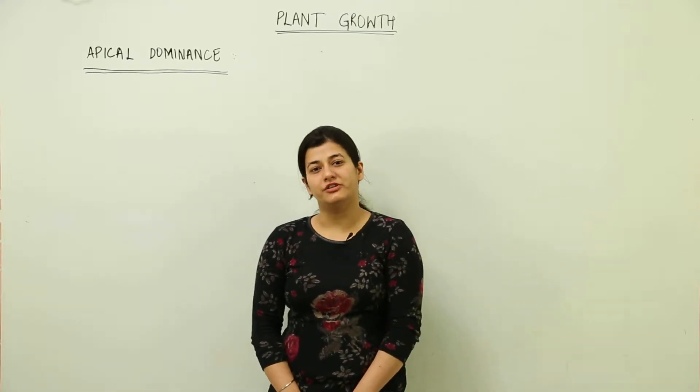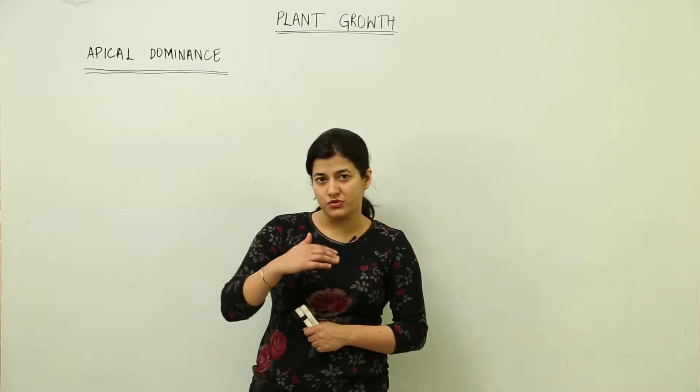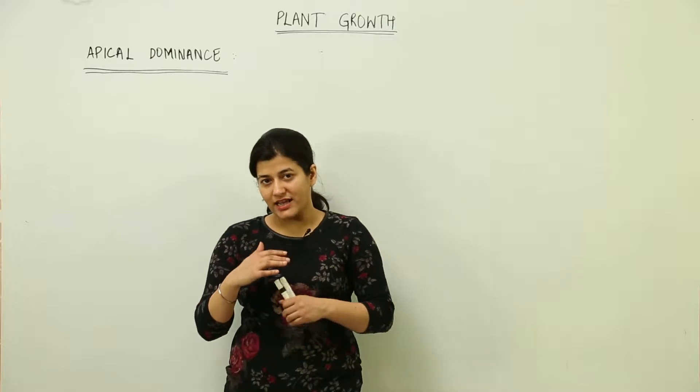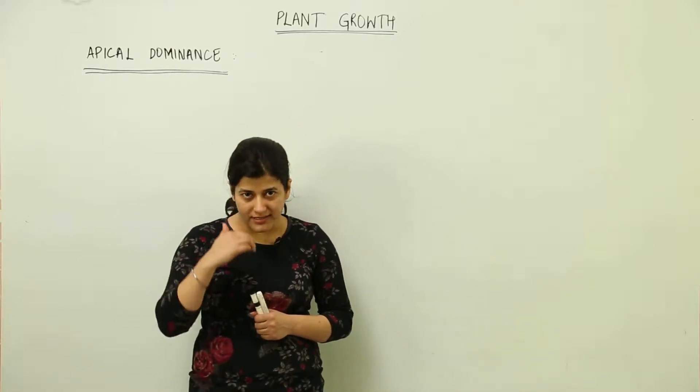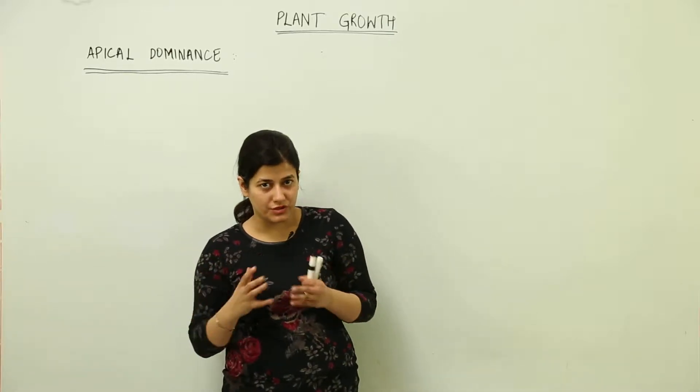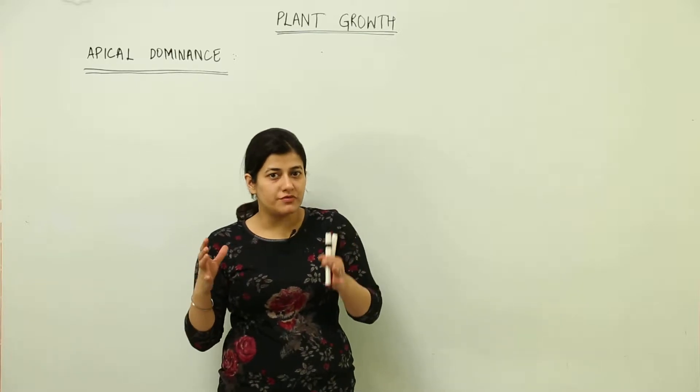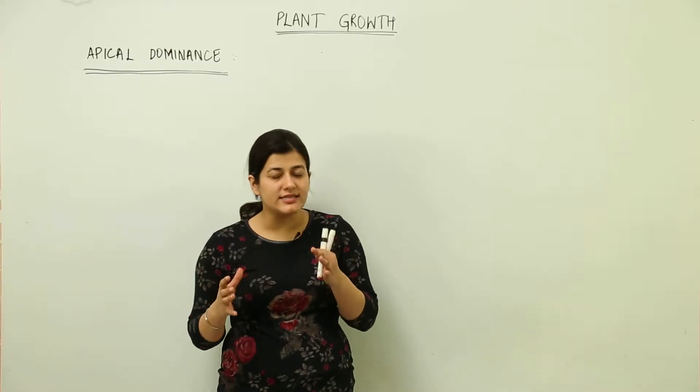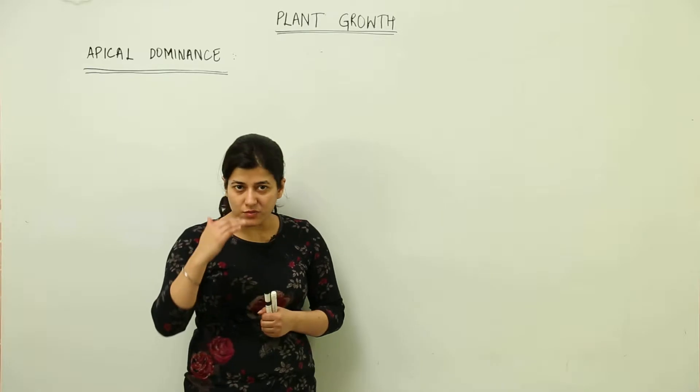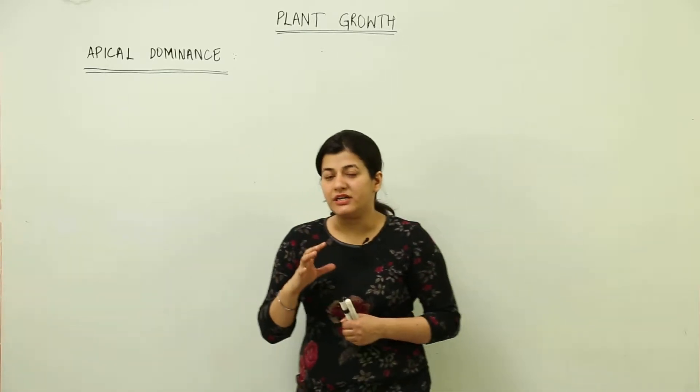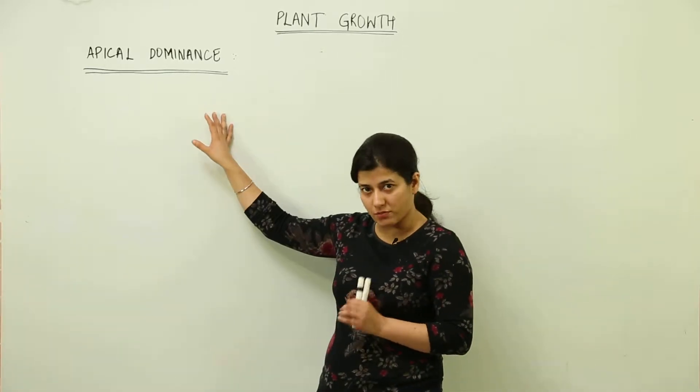Now we have to see a phenomenon due to which plants are able to grow vertically upwards. Their main stem rises upwards and the lateral growth of lateral stems is quite restricted or less in comparison to the apex rising upwards. That particular condition is known as apical dominance.